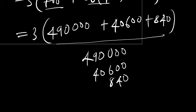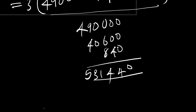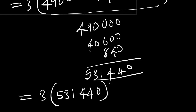Adding those up: 490,000 + 40,600 + 840. We get 531,440. So we now have 3 times 531,440.